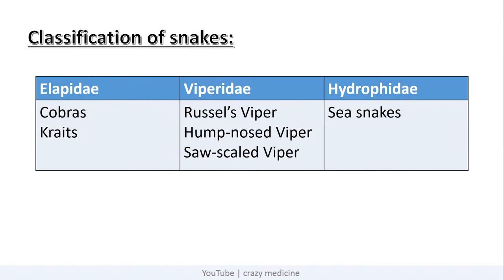First of all, classification of snakes. It is classified into Elapidae, which includes cobras and kraits. Second is Viperidae, which includes Russell's viper, hump-nosed viper, and saw-scaled viper. And last is Hydrophidae, which includes sea snakes.